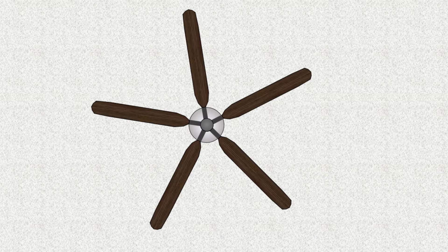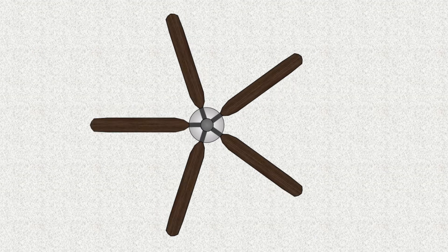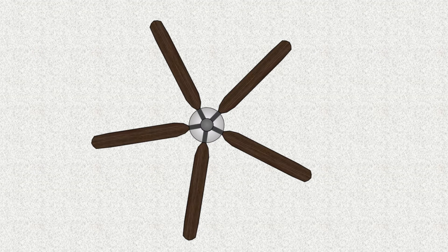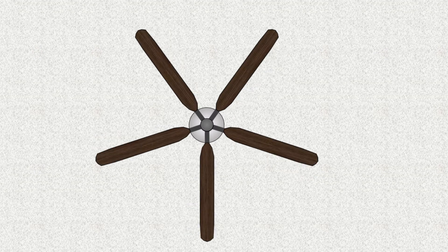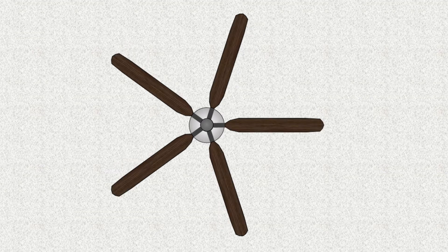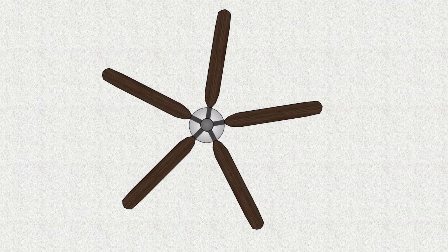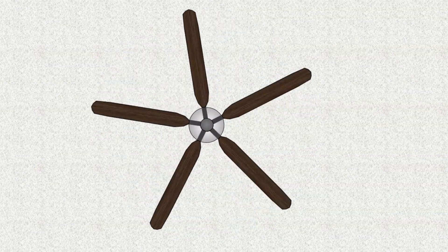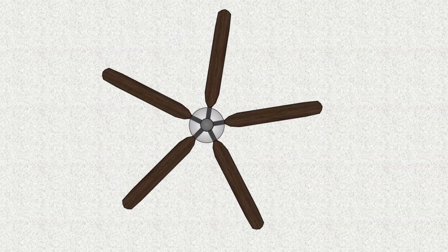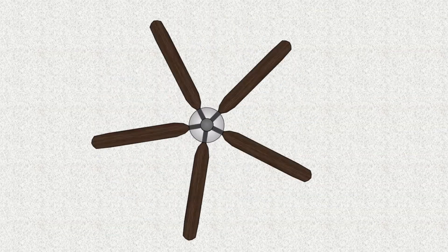Now let's look at how the fan might change from one frame or picture to the next in a video. Suppose the fan is spinning counterclockwise slowly, so the fan blades don't move very far between frames. Here are the individual pictures the camera would take, and here is how it would look when played back. Things look like they should — the blades are spinning counterclockwise slowly.